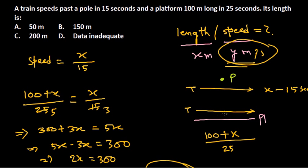The length of the train is 150 meters, so the answer is option B. The key takeaway is that whenever the platform length is given alongside the pole-passing time, you can solve for the train length. If instead of a pole there were another moving train, it would be more difficult. That's the approach for this type of problem.